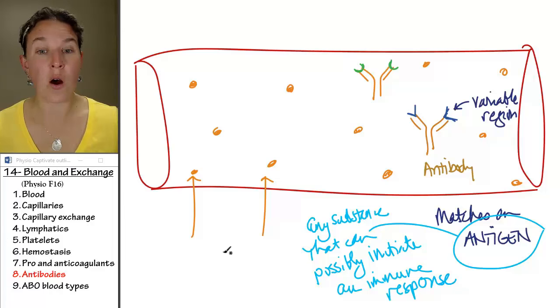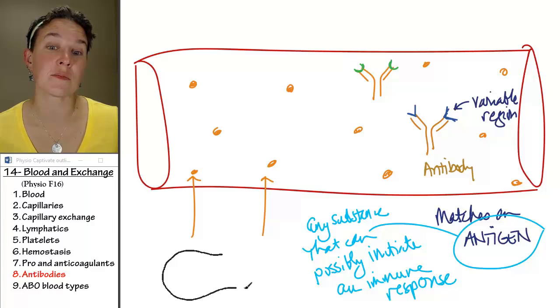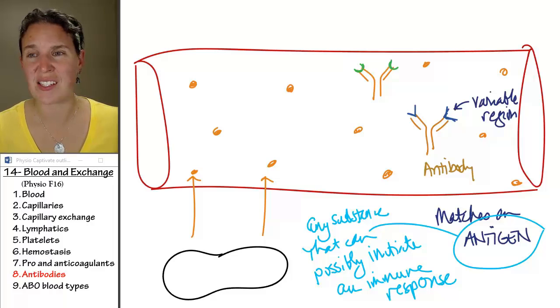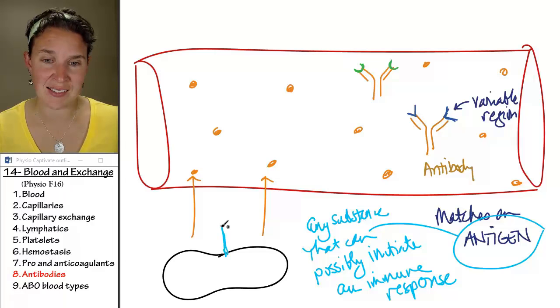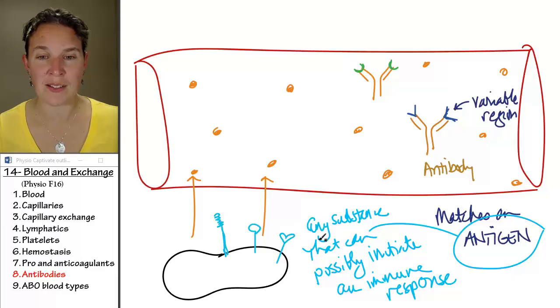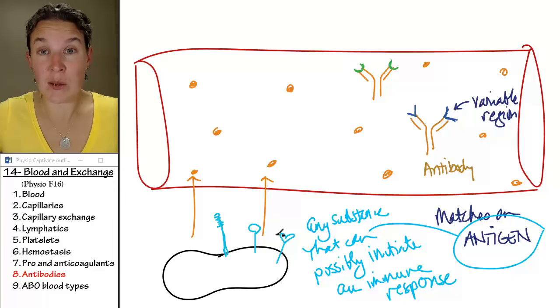All of your cells are marked with antigens. An antigen is just like a molecule that is hanging off of your cells. That's what mine looks like. Those are my antigens.